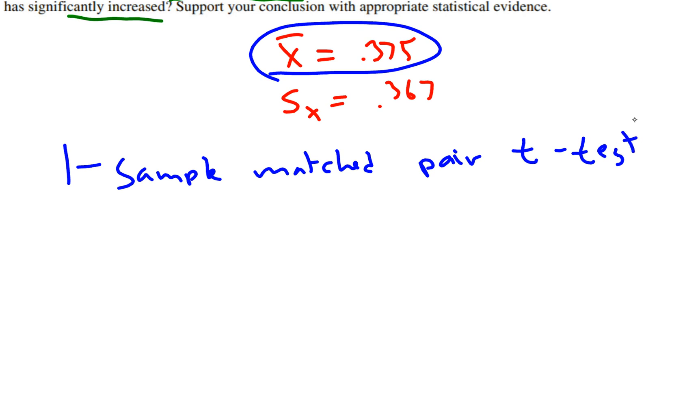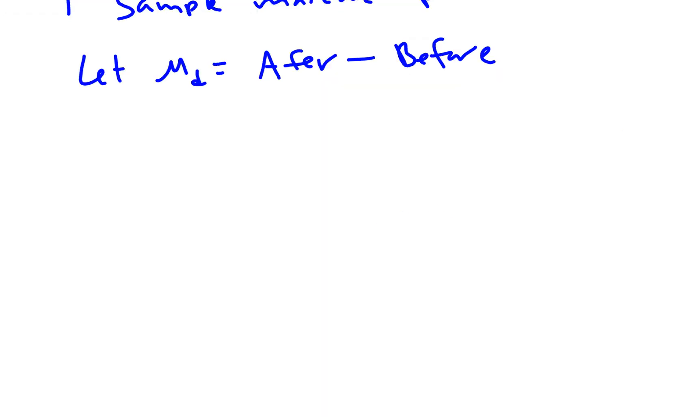So how does that work? Start by defining a variable. We're going to say let μ_d equal the after program score minus the before. H₀, our null hypothesis, would indicate the program doesn't do anything, it's not effective. So in which case we would expect that difference to be an average of around zero. And H_a would be we think the program is effective.